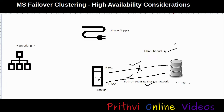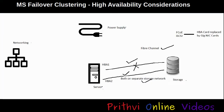In case our storage is not using fiber channel and we are using Fiber Channel over Ethernet or iSCSI, the HBA cards will be replaced by gigabit network adapters and the same policy applies.